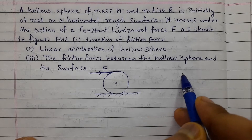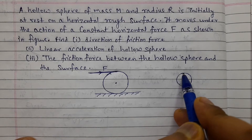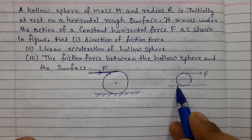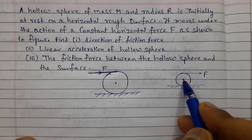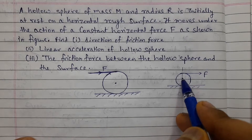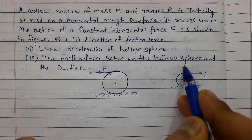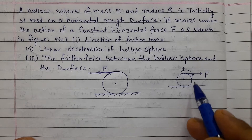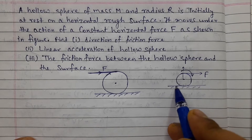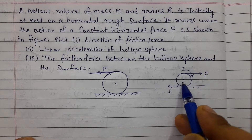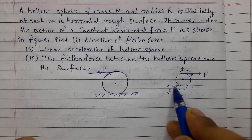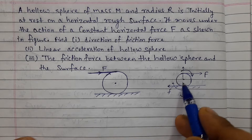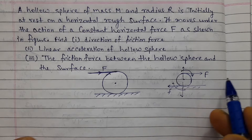The force is tangentially applied at the upper point of the hollow sphere. So for the friction direction — the direction of the force is placed on the horizontal surface. Looking at the torque about the center: the radius vector and the force direction give a torque that is clockwise. So the torque will be clockwise.